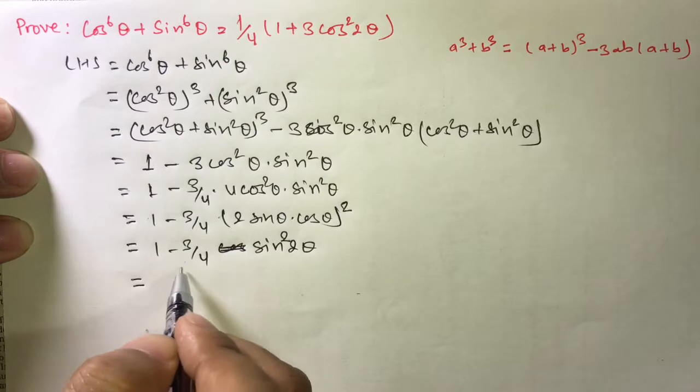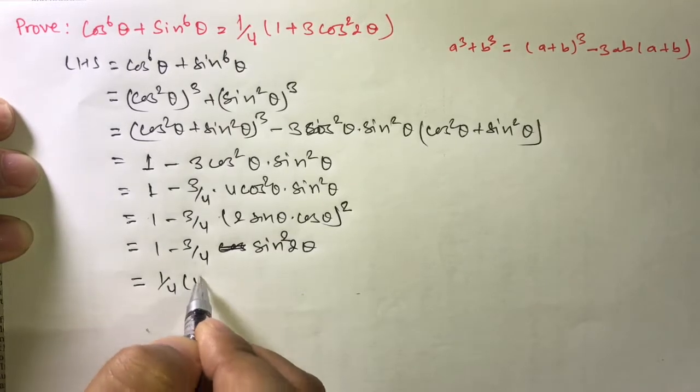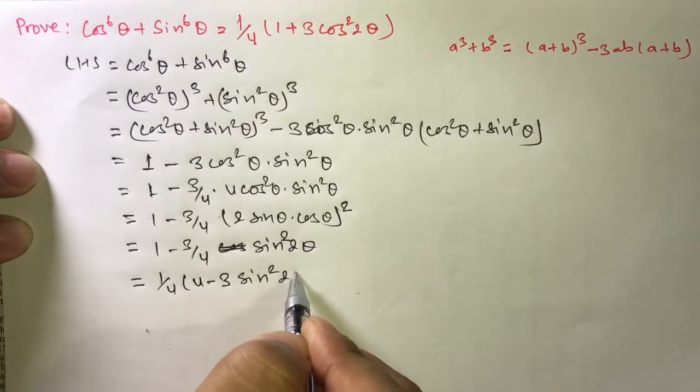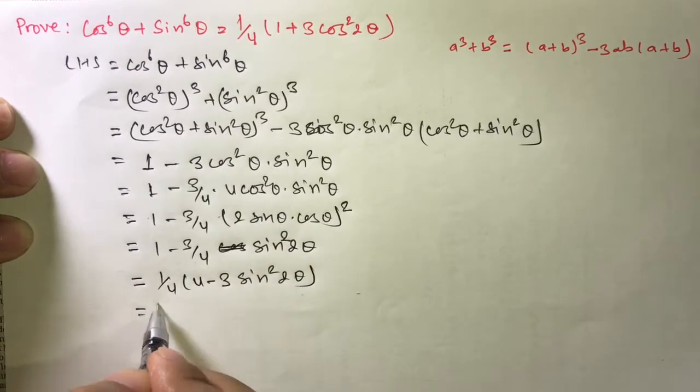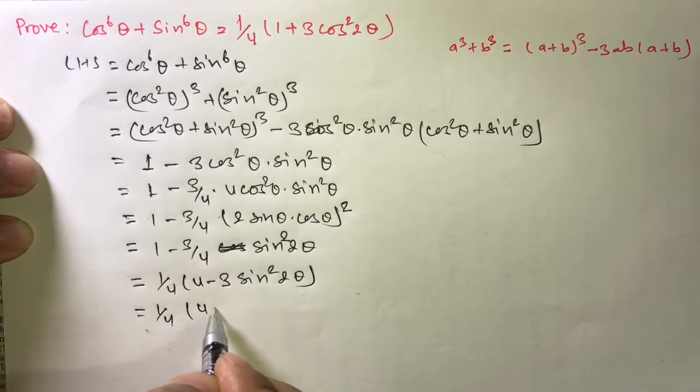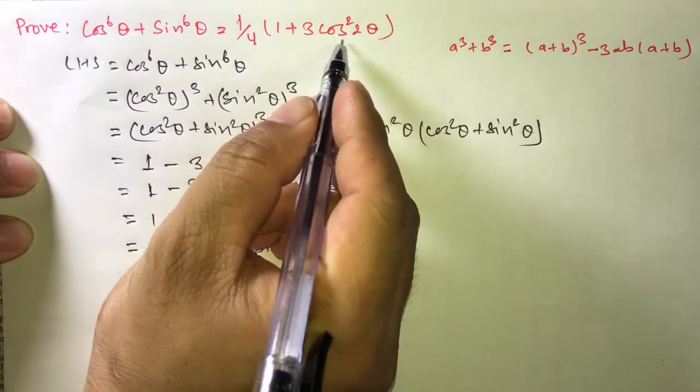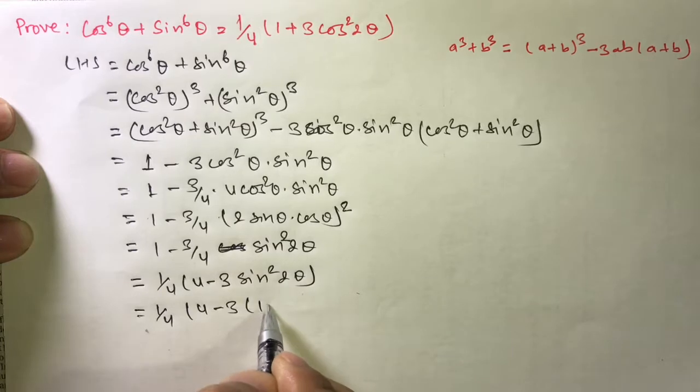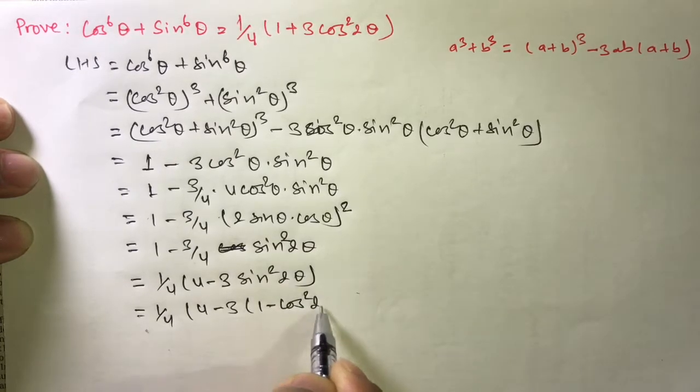Now taking LCM, here will be ¼(4 - 3sin²2θ). LCM gives ¼, and 4 - 3sin²2θ. Then change the sin² into cos²: 1 - cos²2θ.